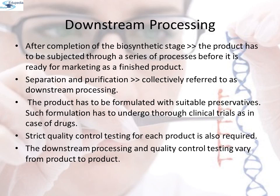Downstream processing: after completion of the biosynthetic stage, the product has to be subjected to a series of processes before it is ready for marketing as a finished product. These processes include separation and purification, collectively referred to as downstream processing. The product has to be formulated with suitable preservatives, and each formulation must undergo clinical trials as in the case of drugs. Strict quality control testing for each product is also required, and both downstream processing and quality control testing vary from product to product.